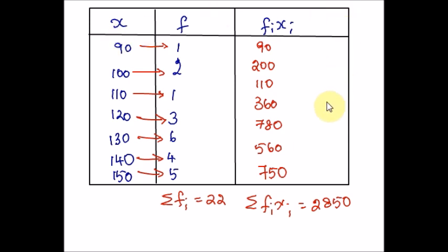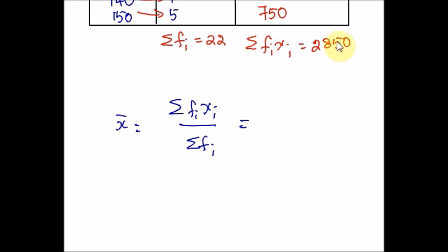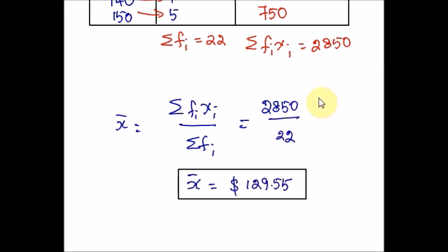So far we have constructed a table, entered the values, multiplied the frequencies with their corresponding x values, and found the total of frequencies and total of the products. Now we are going to use the formula: summation of fi·xi divided by summation of fi. Plugging in the values from the table: 2850 divided by 22 gives 129.55. Since this problem deals with money, the answer is $129.55. Hope you are clear with the direct method.